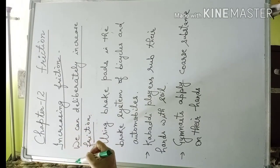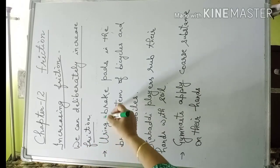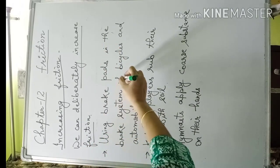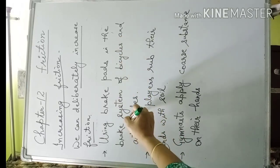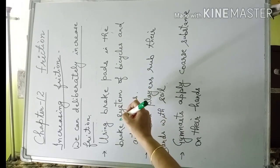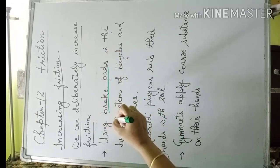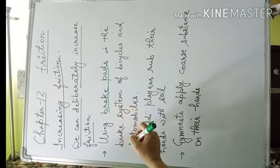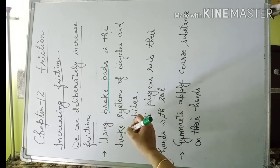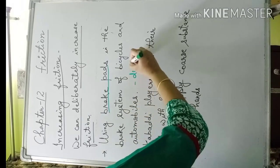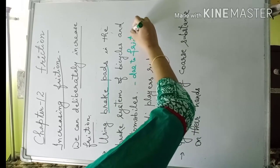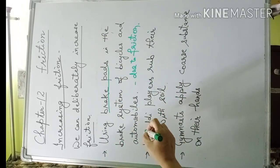Friction is desirable in some situations. We can deliberately increase friction. First is using brake pads in the brake system of bicycles and automobiles. When riding a bicycle, the brake pads do not touch the wheels. But when we press the brake lever, these pads arrest the motion of the rim due to friction. Therefore, the wheels stop moving.